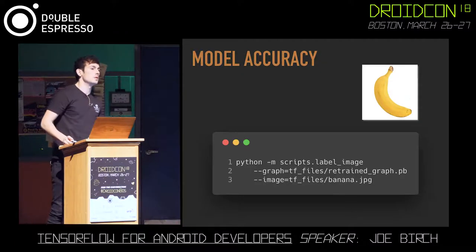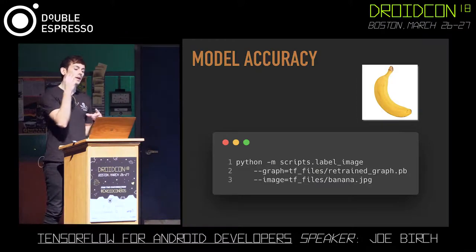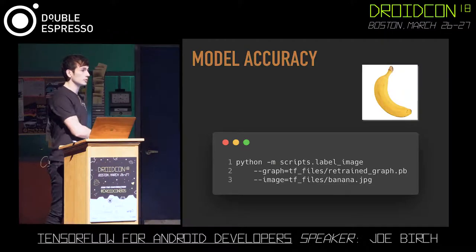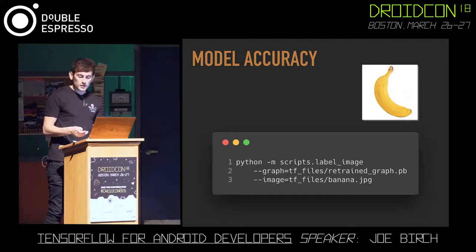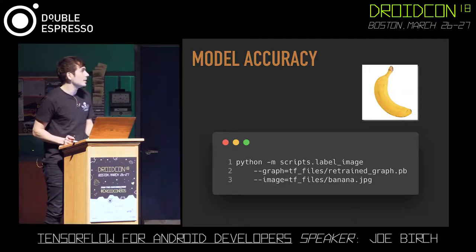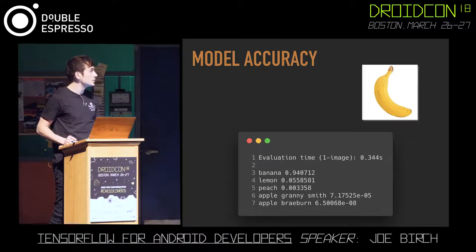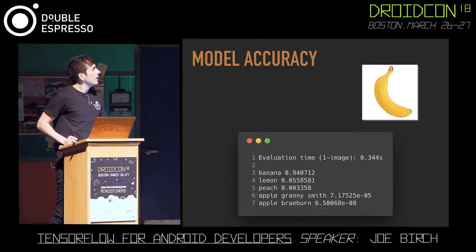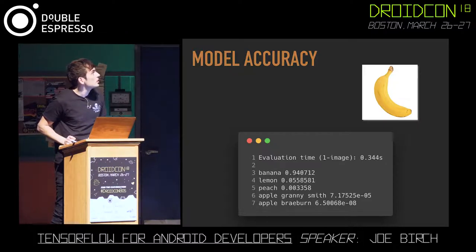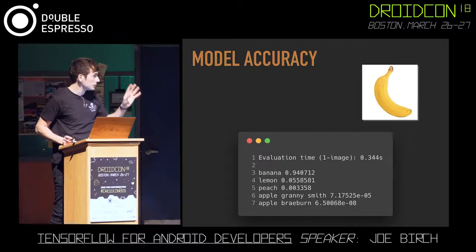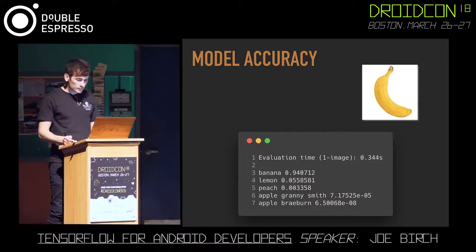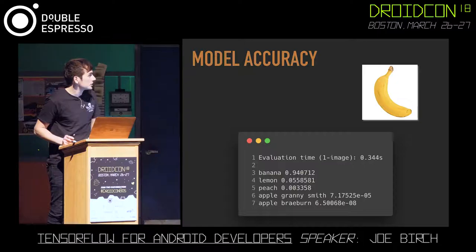Now that we've retrained our model, we want to test it. We take an image not in our training set and run it against the model using the label_image script provided by TensorFlow — we just provide our retrained graph and the image file. Running this gives us an evaluation time, which may vary on mobile devices. The result shows it's done a pretty good job of recognizing the banana. The bottom results are pretty much not recognized, and even the lemon score is higher because of the yellow colour in the image — it's the colour causing TensorFlow to consider it a possible match.